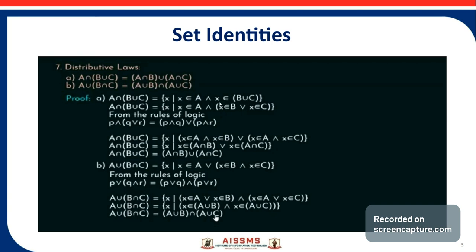We rewrite X belongs to B union C as X belongs to B or X belongs to C. From the rule of logic, P and (Q or R) equals (P and Q) or (P and R). Applying this, we get all X such that (X belongs to A and X belongs to B) or (X belongs to A and X belongs to C), which is (A intersection B) union (A intersection C). Thus, the first distributive law is proved.